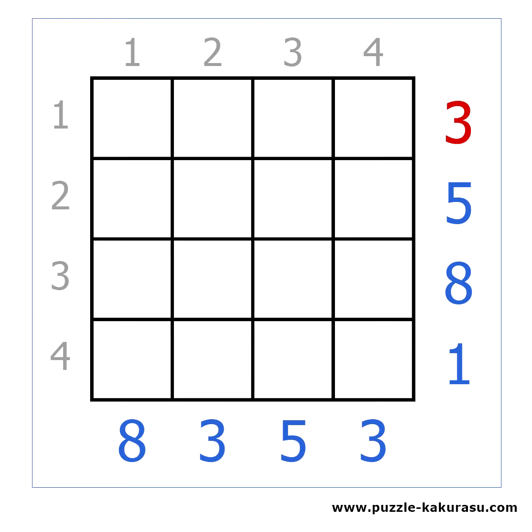The number next to each row shows the sum of the black cells on that row. And the position of a black cell on the row defines its value.